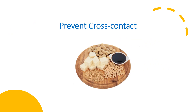Preventing allergen cross-contact is crucial in the food industry to ensure the safety of consumers with allergies. The FDA outlines recommendations for controlling allergen cross-contact in food processing, emphasizing the importance of processing controls such as separation by time and space to minimize the unintentional introduction of allergens into foods. By implementing appropriate procedures and controls, food processors can prevent cross-contact and accurately declare allergens on labels, safeguarding the health of sensitive individuals.